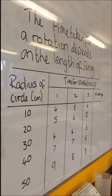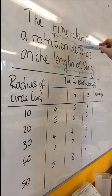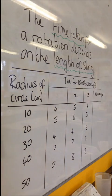Okay, so this is my results table here. You can see my hypothesis at the top was the time taken for a rotation depends on the length of the string. The length of the string was the bit that I'm changing, so that is my independent variable. And the time taken was the bit that I was measuring, so that was my dependent variable.